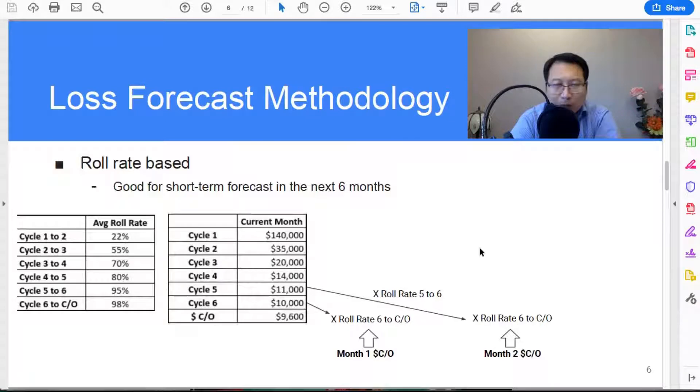In month one, so this is fairly easy, right? In month one only the accounts in today's cycle six accounts will become charged off. So you look at cycle six, that's ten thousand dollars, you times the roll rate from six to charge off which is 98 percent. So that will be your forecasted month one charge off amount.